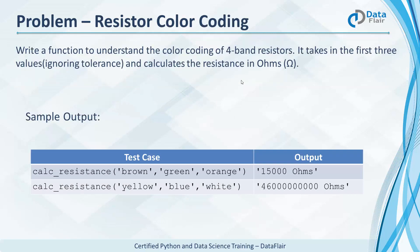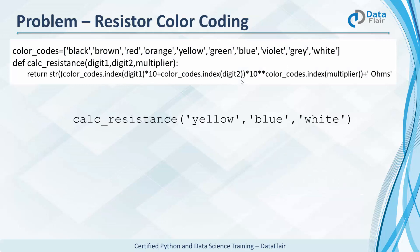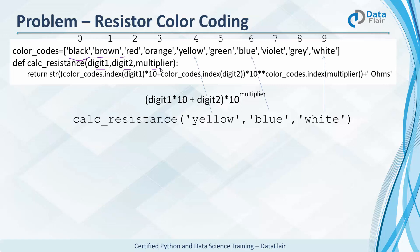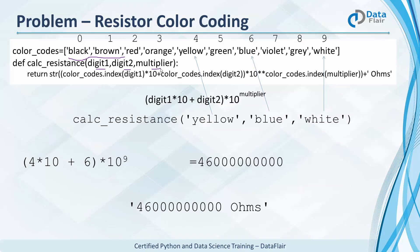Can you build a function that calculates the resistance value using a resistor's color coding? We have four-band resistors — take the first three values and ignore tolerance, then calculate the resistance in ohms. Black is 0, brown is 1, and so on. This function takes two digits and a multiplier: first digit's index times 10 plus second digit's index, all raised to the power of the multiplier. It concatenates that value to the string 'ohms' and returns it. Yellow, blue, and white have indices 4, 6, and 9 in the color list — so it returns the correct resistance string.